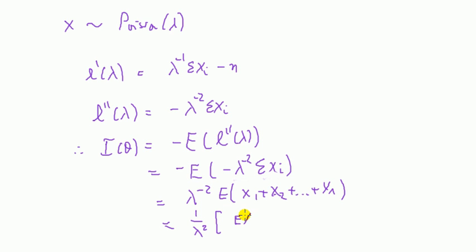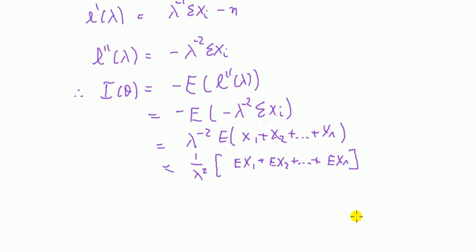Some professors like to stress that this is true whether or not the x's are independent or correlated. We've shown also from a previous video that the expected value of a Poisson is its mean, lambda. They're all lambda, so you've got n lots of lambda over lambda squared. This is equal to n over lambda.